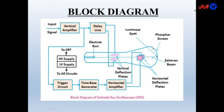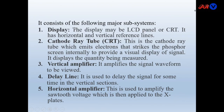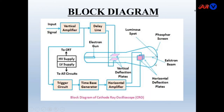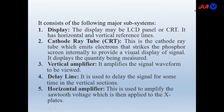The horizontal deflection plates move the spot from left to right, and the vertical deflection plates deflect the signal in upward and downward direction. This is the luminous spot, produced where the beam of electrons strikes the fluorescent screen. It consists of the following major subsystems. First is the display — it can be LCD or CRT — and it has horizontal and vertical reference lines for measurement purposes. The cathode ray tube is the heart of the CRO; it emits electrons that strike the phosphor screen internally to provide a visual display of the signal.